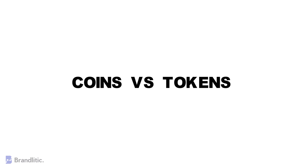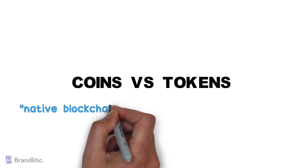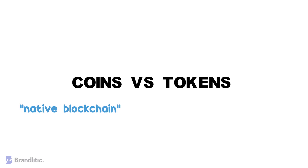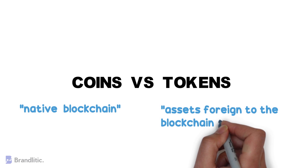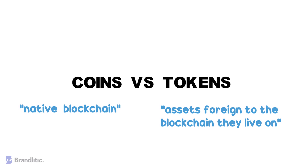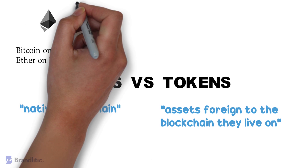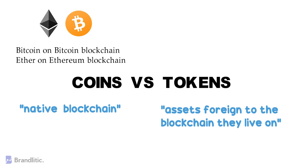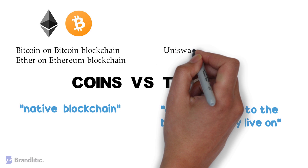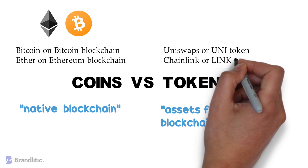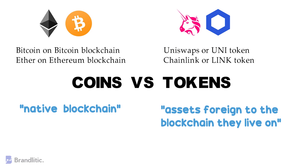Coins are assets on their native blockchain, whereas tokens are assets foreign to the blockchain they live on. Examples of coins are Bitcoin on the Bitcoin blockchain and Ether on the Ethereum blockchain. Examples of tokens include Uniswap (UNI token) and Chainlink (LINK token), which are used on the Ethereum blockchain.